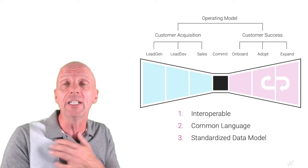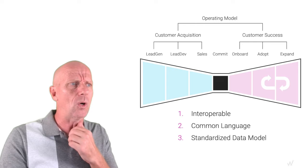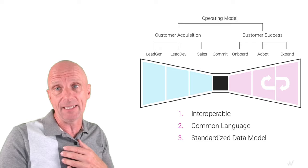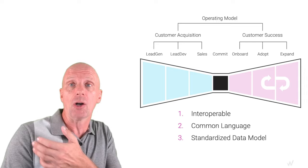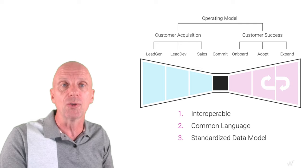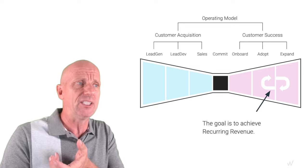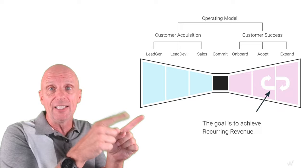Are we all speaking the same way about our customer so the customer doesn't look at us confused? And then there's a standardized data model. Today, many different GTM motions use different data language — MQL and SQL may be familiar if you're in marketing. But with the popularity of PLG, we're introducing a whole new level of metrics, which starts to create confusion — now I not only have departments and functions speaking different languages, I also have different data.